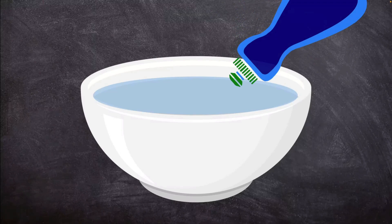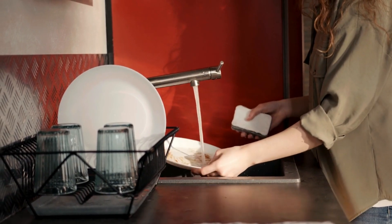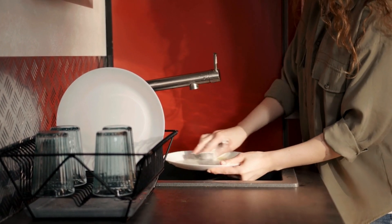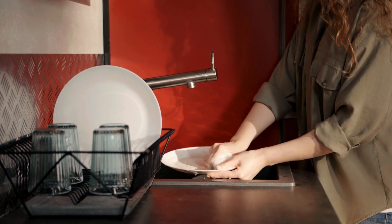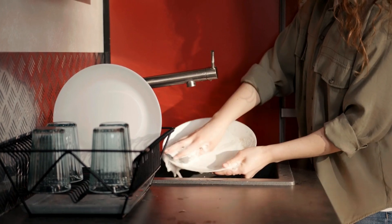Soap makes the surface tension of liquids weaker. If you added a few drops of soap to your bowl of water, you may find it much harder to keep the paper clip from sinking. Because soap breaks the bonds that hold the liquid molecules together, it makes it easier to separate and remove dirt and grease while cleaning.